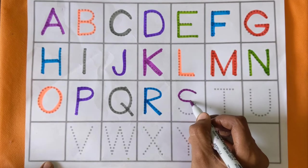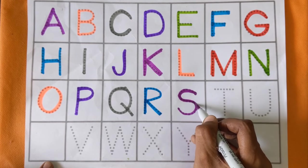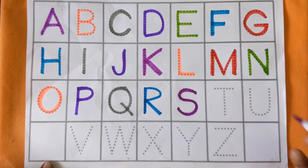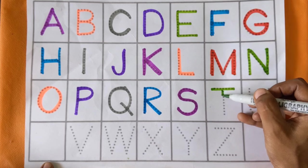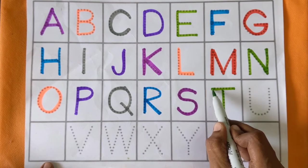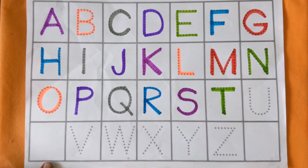Next is alphabet S. S for swan and S for sparrow, purple color. After S, next is alphabet T. T for temple and T for toy, light green color.